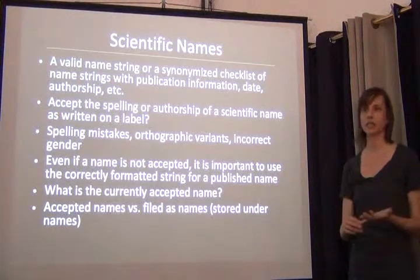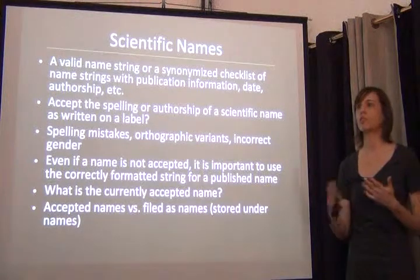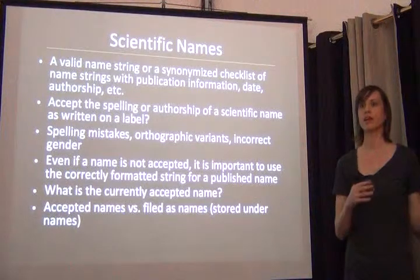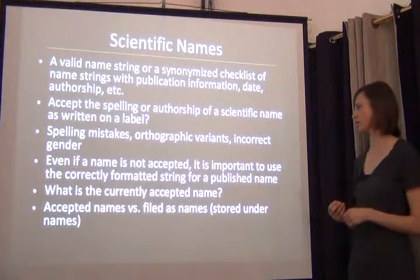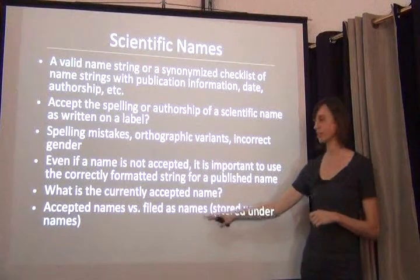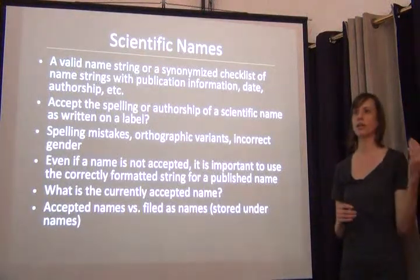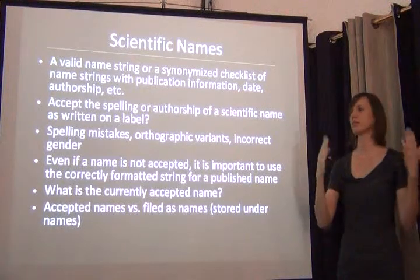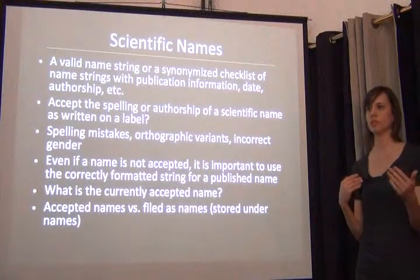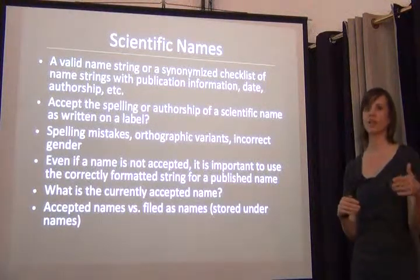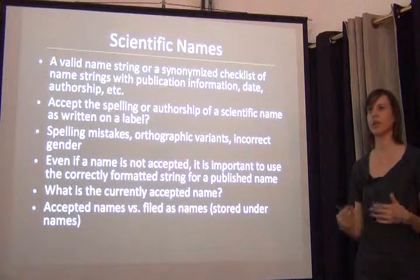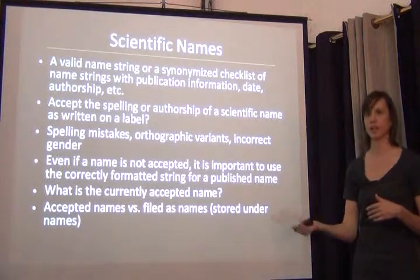In terms of scientific names, you're dealing with managing a collection, and this can have very different roles depending on whether you're a collections manager or a researcher wanting only the correct accepted name. Many databases now use a 'filed as name' or 'stored under name' field so you can say this specimen is filed under this name, but the accepted name for this taxon is actually this — so you know where to find the specimen in the herbarium, but you can publish the accepted name online.